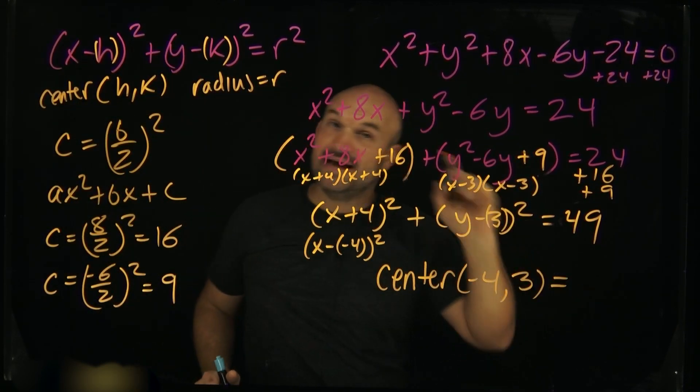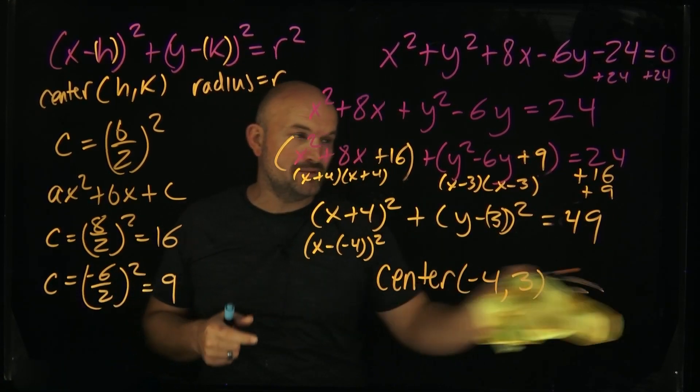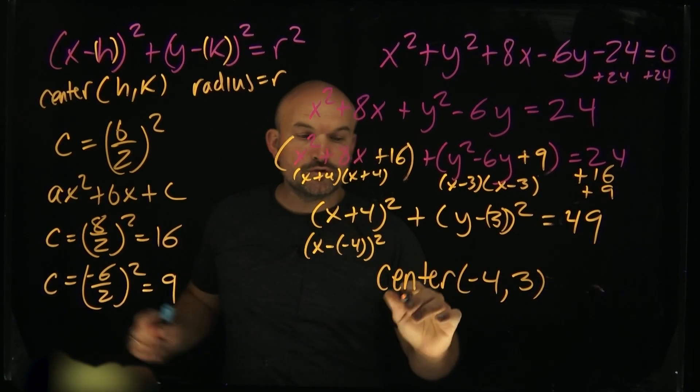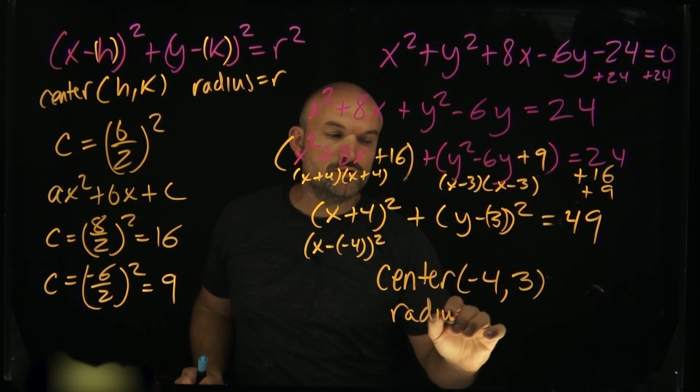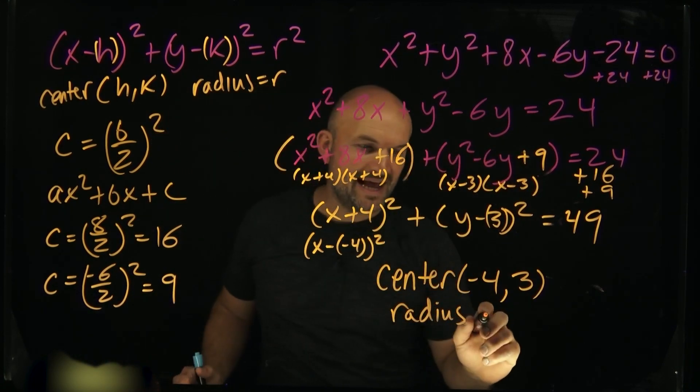And remember, do not make a mistake here of thinking that your radius is going to be 49. That's a really big radius, especially if you had to graph this. The radius is going to be the square root of this number, which is 49, which is going to equal a 7.